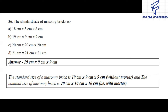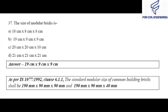Question number 36: The standard size of masonry brick is — the right answer is 19 cm × 9 cm × 9 cm. The standard size of masonry brick without mortar is 19 cm × 9 cm × 9 cm, and the nominal size of masonry brick with mortar is 20 cm × 10 cm × 10 cm.